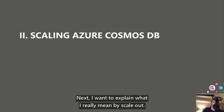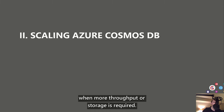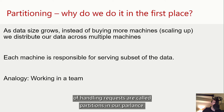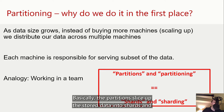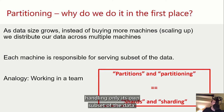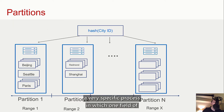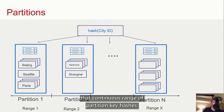I want to explain what I really mean by scale out. Scale up means buying a more powerful machine. But in a scale-out model, we keep the same size server SKU with compute and SSD-backed storage, and simply duplicate that SKU when more throughput or storage is required. The identical SKU nodes that share the responsibility of handling requests are called partitions — you might know the term shard or sharding from other distributed NoSQL databases. Basically, the partitions slice up the stored data into shards, and each partition is responsible for handling only its own subset of the data. Cosmos slices up the data and assigns responsibility to physical partitions using a specific process in which one field of the document — called the partition key — is hashed when the document is inserted, and each partition is assigned a subset of the range of possible hash values.